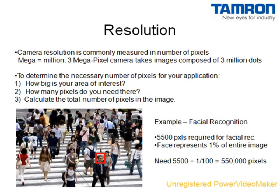Camera resolution is a measure of the amount of information contained in the image and is commonly measured in number of pixels. A pixel is a single dot of color information in the image, and the color information from all the pixels makes up the full image. The term mega means million, and a three megapixel camera has three million pixels. In order to determine the number of pixels you will need for your application, you will need to know how big your area of interest is and how many pixels you will need to represent that area. To calculate the number of pixels you will need, divide the number of pixels you need in your area of interest by the fraction of the entire image that area represents.